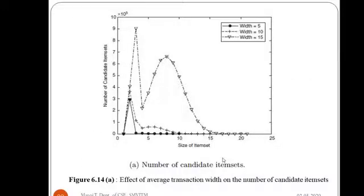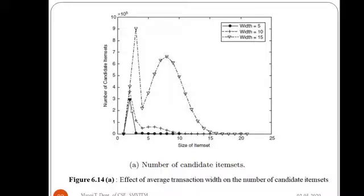We can understand this with the help of a plot comparing candidate item sets against frequent item sets. The line with higher transaction width performs more candidate item set examinations. For lower transaction widths like 5 and 10, the line spikes initially but approaches 0 as item set size increases. When the transaction width is 15, it is higher — showing peaks and valleys, spiking to a peak then dropping to a valley before spiking again and then reducing.